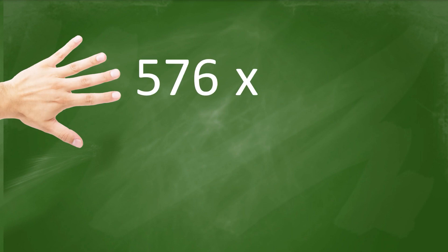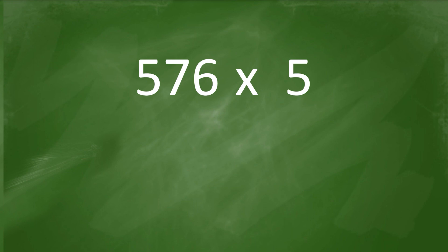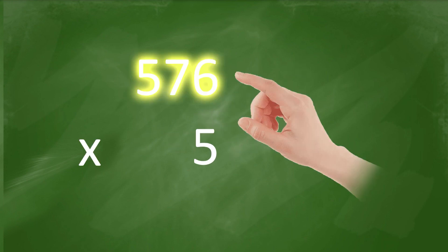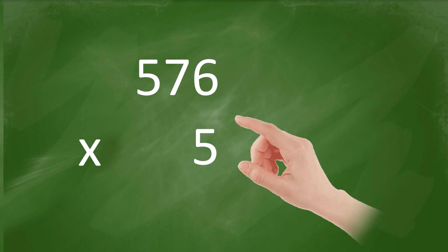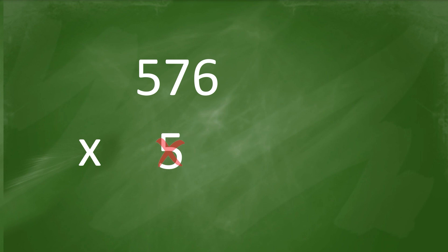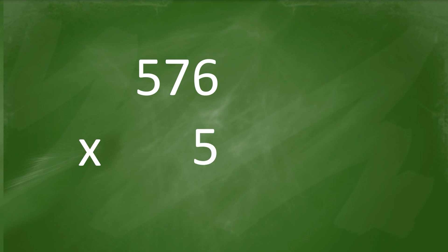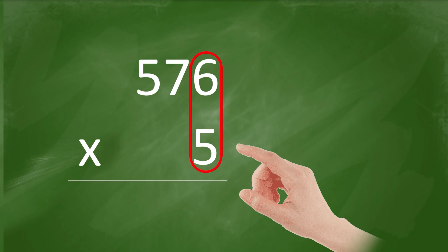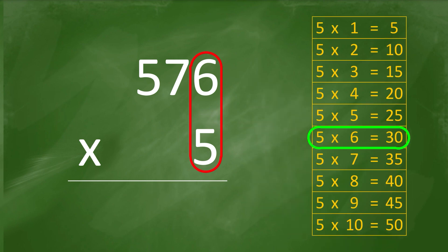Let us learn how to multiply multi-digit numbers. First example: 576 times 5. When you have a problem written like this, rewrite it in column form. Always put the number with the most digits on top. Make sure the two given numbers align to the right — not here, not here; it should align from here. Let's begin multiplying.